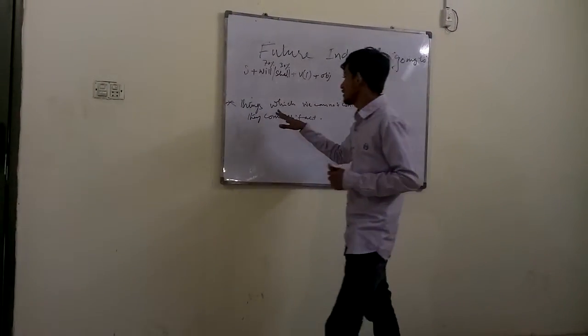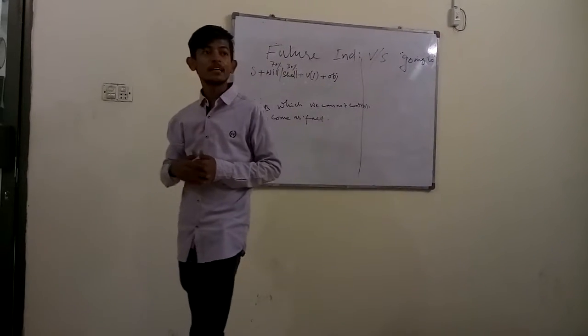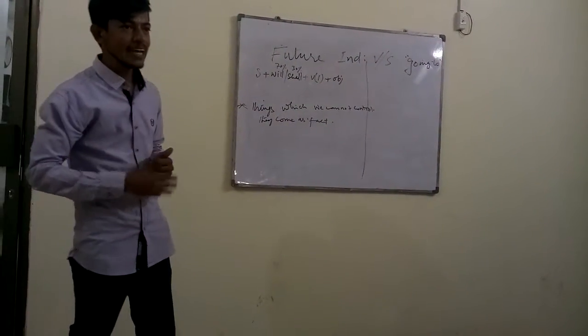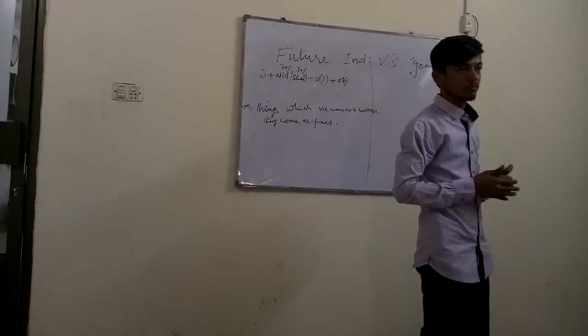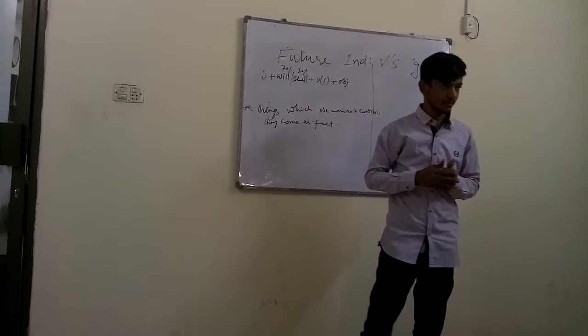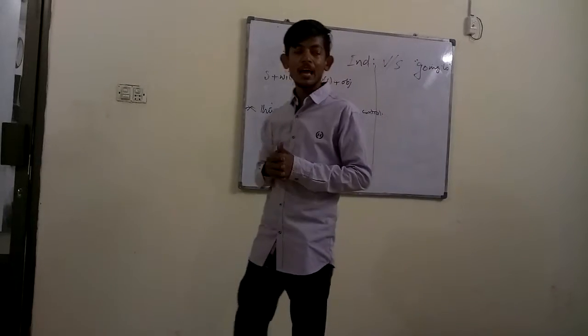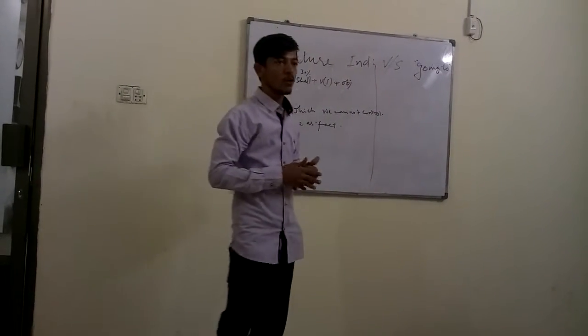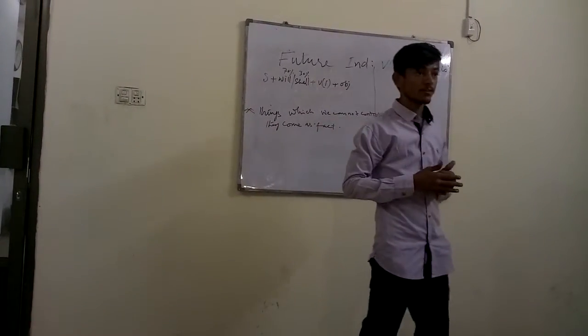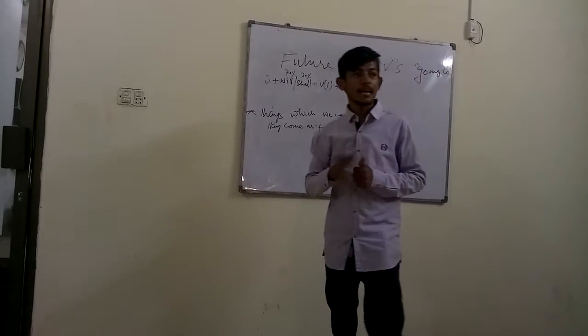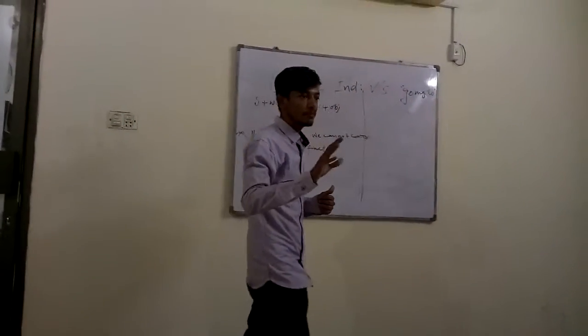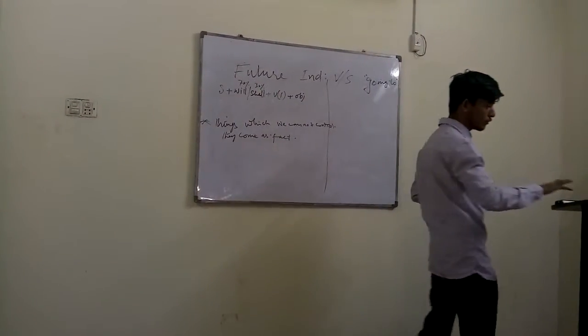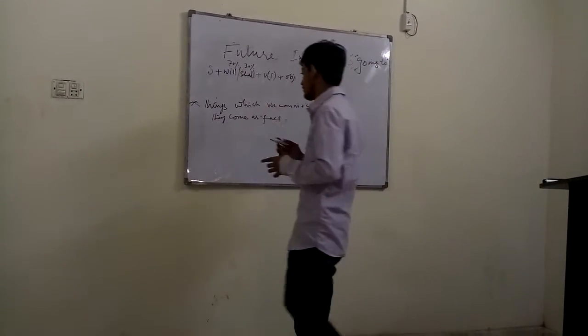First is things we cannot control. They come as fixed events, like festivals. Every year they have to come and they have a particular date. For example, Eid will come on a specific date. That means we use future indefinite for events with definite times.